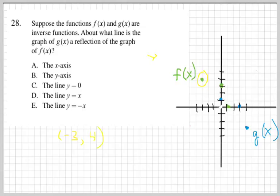So that means that on the g of x, my coordinate over there is just going to be the inverse. So it should be 4, negative 3.